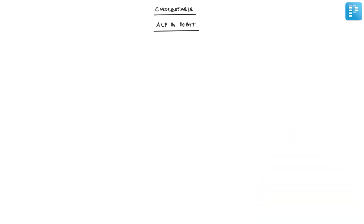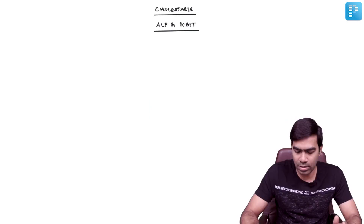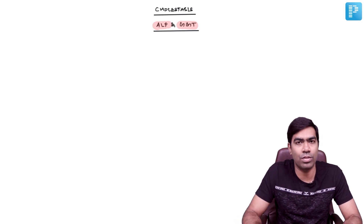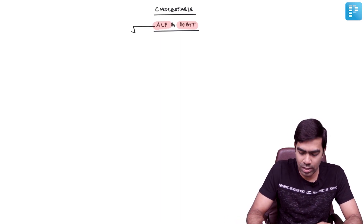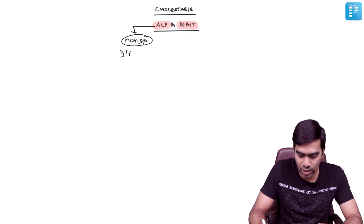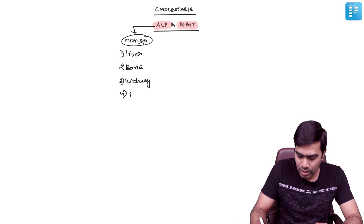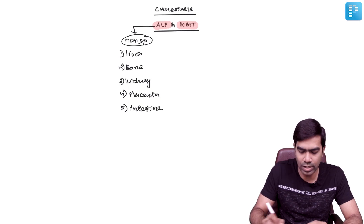Enzymes that are important in cholestasis — there are two cholestatic enzymes. The first one is alkaline phosphatase and the second one is GGT. Alkaline phosphatase is relatively non-specific because it is not only seen in the liver; it can be seen in bone as bone-specific alkaline phosphatase, kidney as kidney-specific alkaline phosphatase, in the placenta as placental alkaline phosphatase, and also as intestinal alkaline phosphatase.